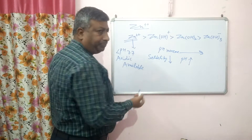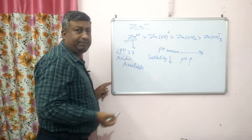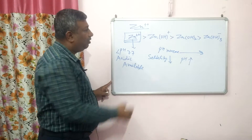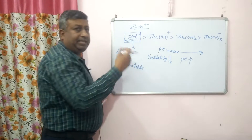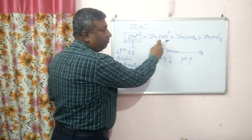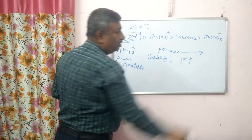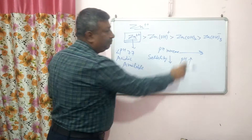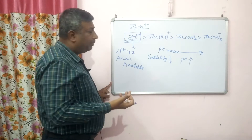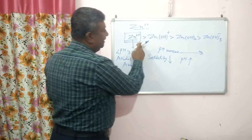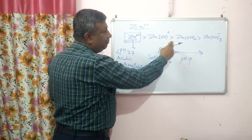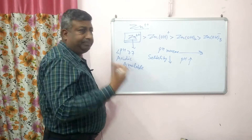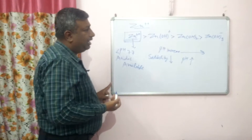At high pH, solubility continues to decrease. As pH increases, zinc is converted first to ZnOH⁺, then Zn(OH)₂, and then Zn(OH)₃⁻, which is the anionic form. So as pH increases, hydrolytic species increase and solubility decreases. This is the reason that zinc is not available at high pH.